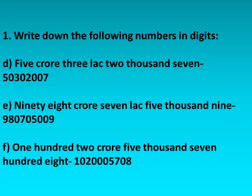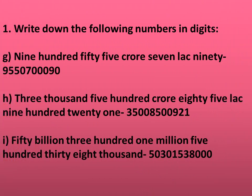Next we have number d: five crore three lakh two thousand seven. Ninety eight crore seven lakh five thousand nine. Number f: 102 crore five thousand seven hundred eight. Number g: nine hundred fifty-five crore seventy lakh ninety. Number h: three thousand five hundred nine hundred twenty-one. Number i: fifty billion three hundred one million five hundred thirty-eight thousand.